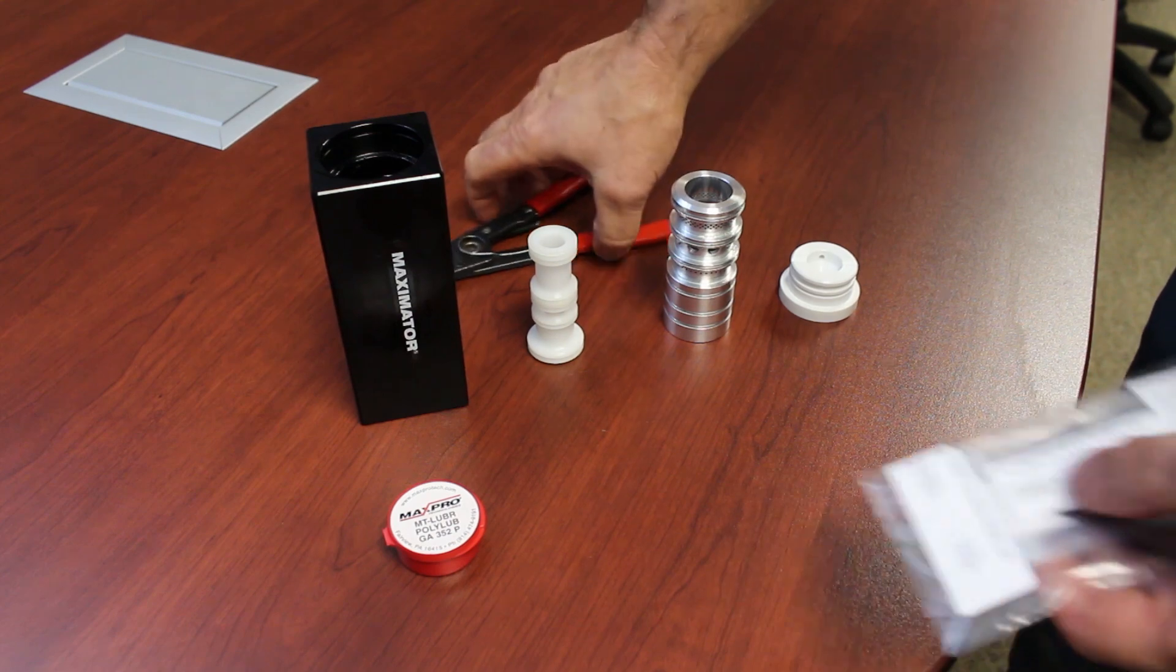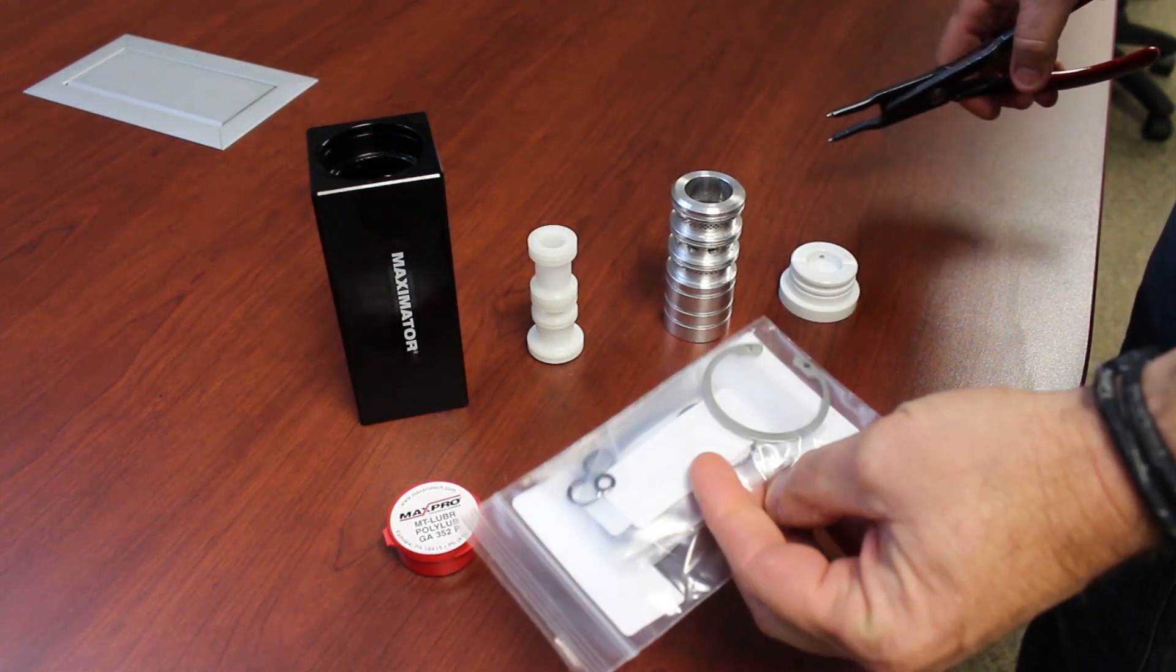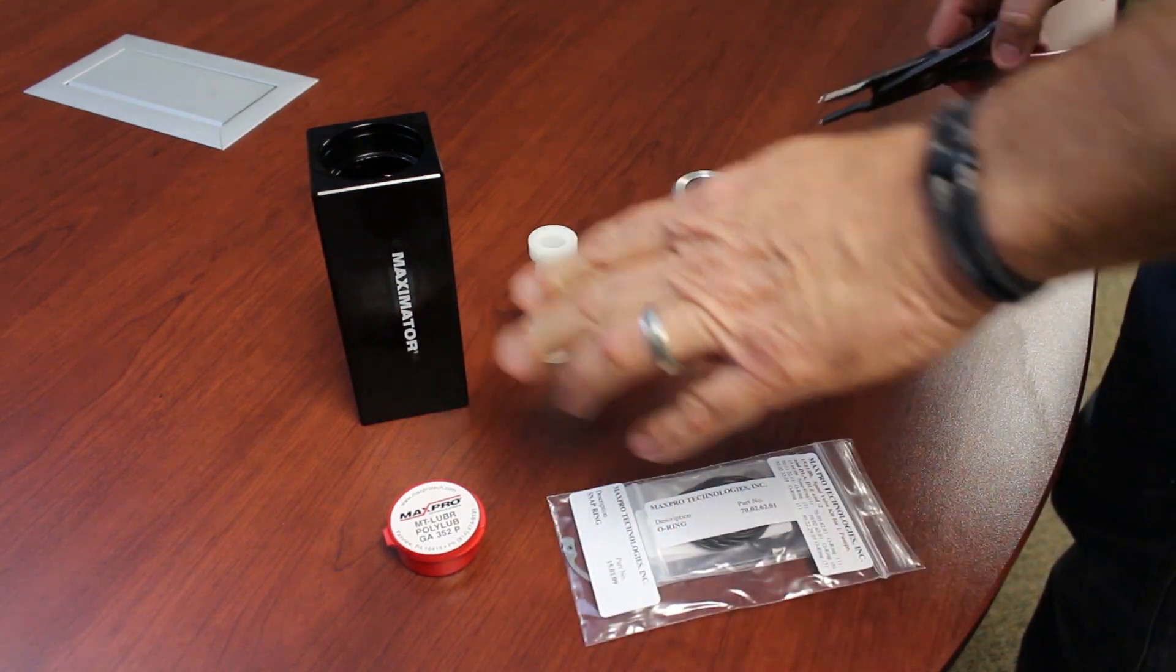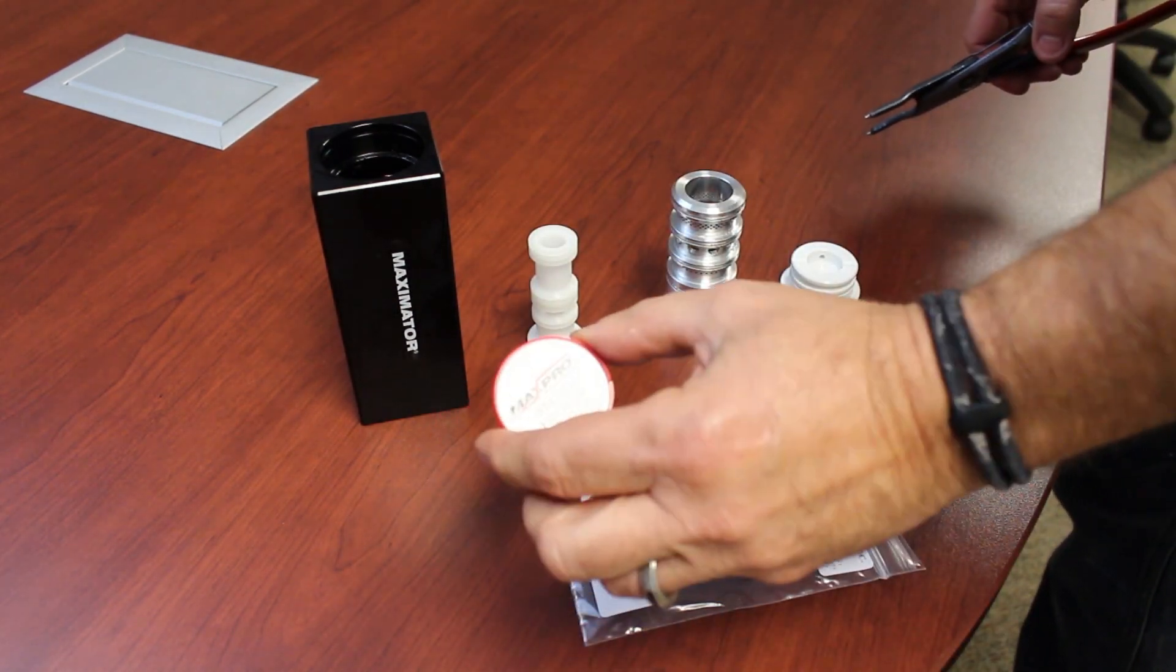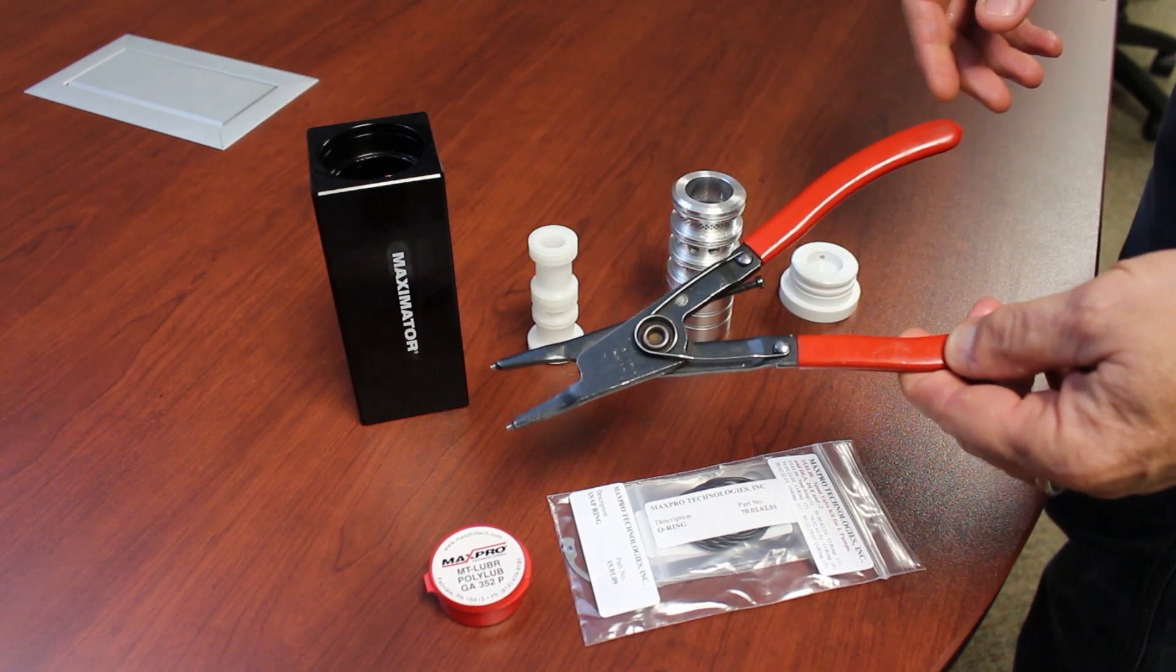Things you'll need to have: a repair kit, which has all the O-rings and a snap ring that you'll need to rebuild the spool valve, and grease for the O-rings. The tools you'll need is just a pair of snap ring pliers.